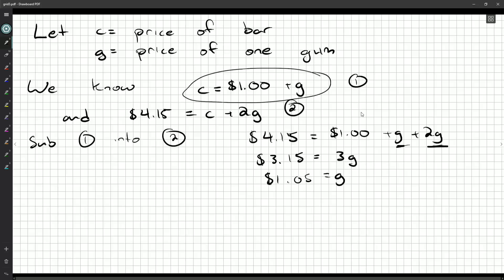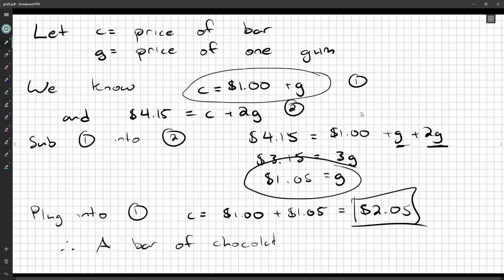Now this is pretty important: plug this back into equation number one. c is a dollar more than a pack of gum, and we know the cost of a pack of gum. So we get two dollars and five cents. That's our final answer. You can put a therefore statement: Therefore, a bar of chocolate costs $2.05.